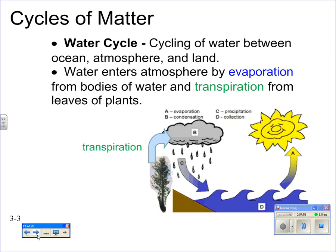Cycles of matter are really important for how matter moves through the ecosystem. The water cycle is probably the best-known. Key terms include evaporation, driven by the sun's energy; condensation in the clouds; precipitation when it falls; and runoff, where water goes back to the ocean or a body of water. Then the cycle repeats — this is also nature's way of purifying water.